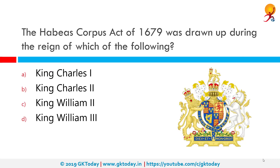The Habeas Corpus Act of 1679 was drawn up during the reign of King Charles II to define and strengthen the ancient prerogative writ of Habeas Corpus, whereby persons unlawfully detained can be ordered to be brought before a court of law.